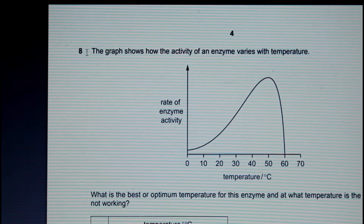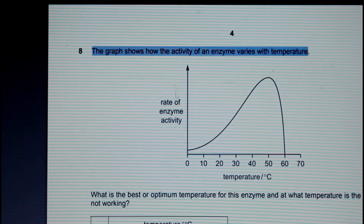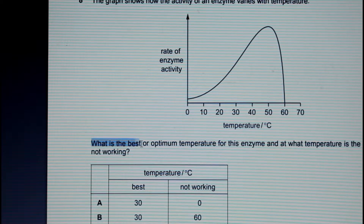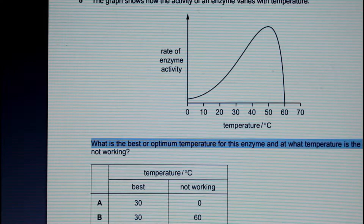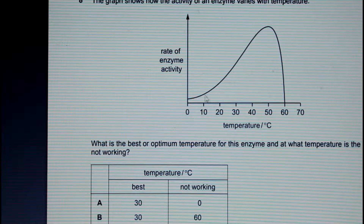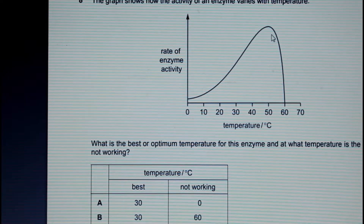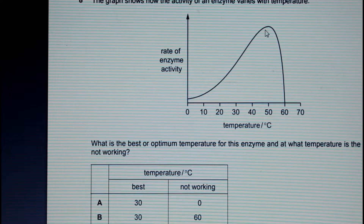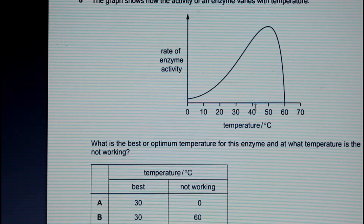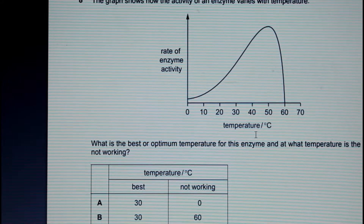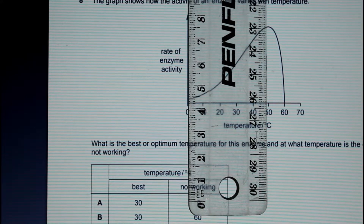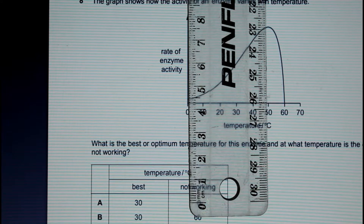Let's take a look at question 8. The graph shows how the activity of an enzyme varies with temperature. The rate of enzyme activity is on the y-axis and temperature is on the x-axis. The question asks what is the optimum temperature for this enzyme and at what temperature is the enzyme not working. We need to identify the peak, which represents the highest rate of activity. It's easy to make mistakes here — you might think it's around 40, but you need to take a ruler, put it on the peak, and see where it lands on the x-axis.